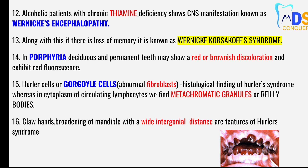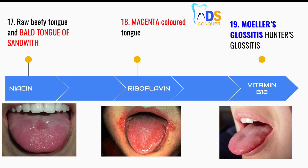Point number fifteen: abnormal fibroblasts are the characteristic histological finding of Hurler's syndrome, whereas in the cytoplasm of circulating lymphocytes we find metachromatic granules, also called Reilly bodies. Point number sixteen: claw hands, broadening of the mandible, and a wide intercondylar distance are features of Hurler's syndrome.